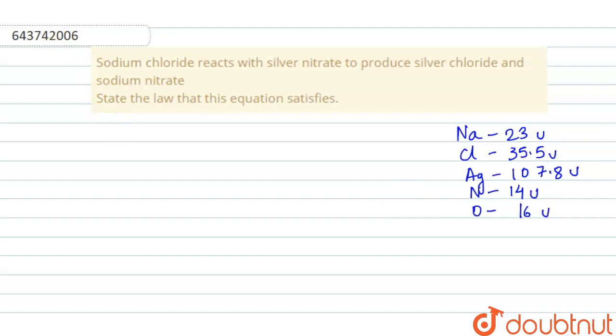So now let us write the reaction. The reaction says that NaCl reacts with AgNO3 to form AgCl, which is a precipitate, plus NaNO3.